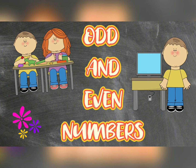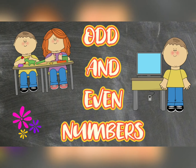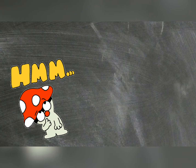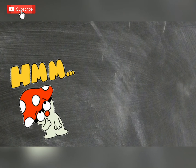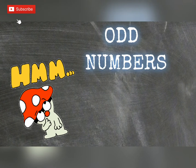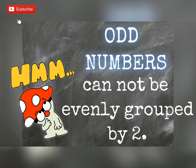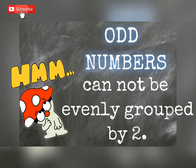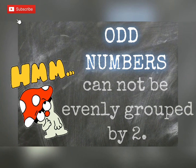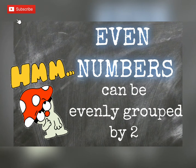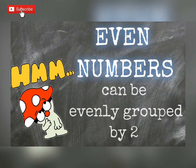Our lesson for today is about odd and even numbers. What are these? When we say odd numbers, these are numbers that cannot be evenly grouped by two. While even numbers are numbers that can be evenly grouped by two. I will explain further.